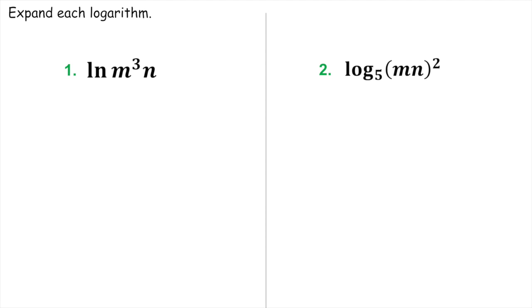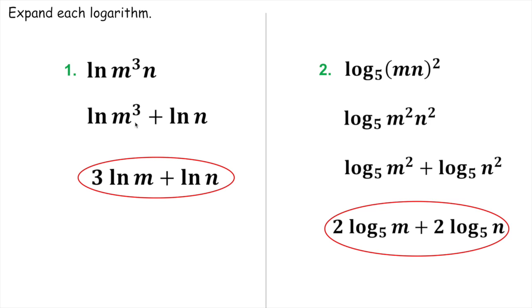Now we're going to start combining things we've learned. For number one, you're going to have two different steps — I recommend doing your addition first, then moving the three out in front last. On number two, I recommend doing your squared first because that applies to both the M and the N, then move it out in front at the very end. Check your answers: I broke the two apart first, then moved the three out in front. On the second problem, this is M squared times N squared — the squared applies to both — then I broke the two apart, then moved the two out in front of both.